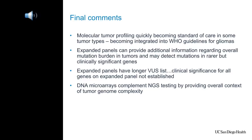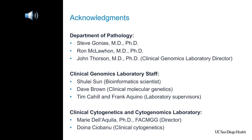Some final comments: molecular tumor profiling is quickly becoming a standard of care for some tumor types and is being integrated into the WHO guidelines for glioma. Expanded panels can provide additional information regarding overall mutation burden and may detect mutations in rare but clinically significant genes that might be missed by smaller focused panels. Expanded panels do have a longer variant of unknown significance list because many genes on there are interesting but not yet well characterized clinically — but the more we do, the more we learn, and things can move from a VUS into a clinically significant category. DNA microarrays really complement NGS testing by providing the overall context of tumor genome complexity, which has been especially helpful in these brain cancer cases.